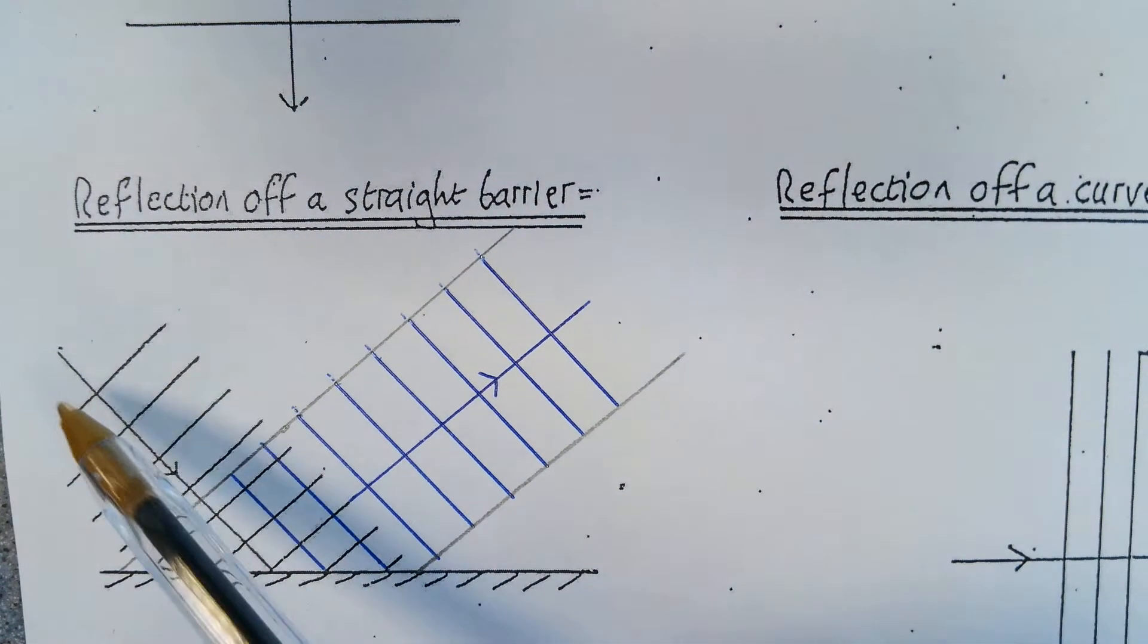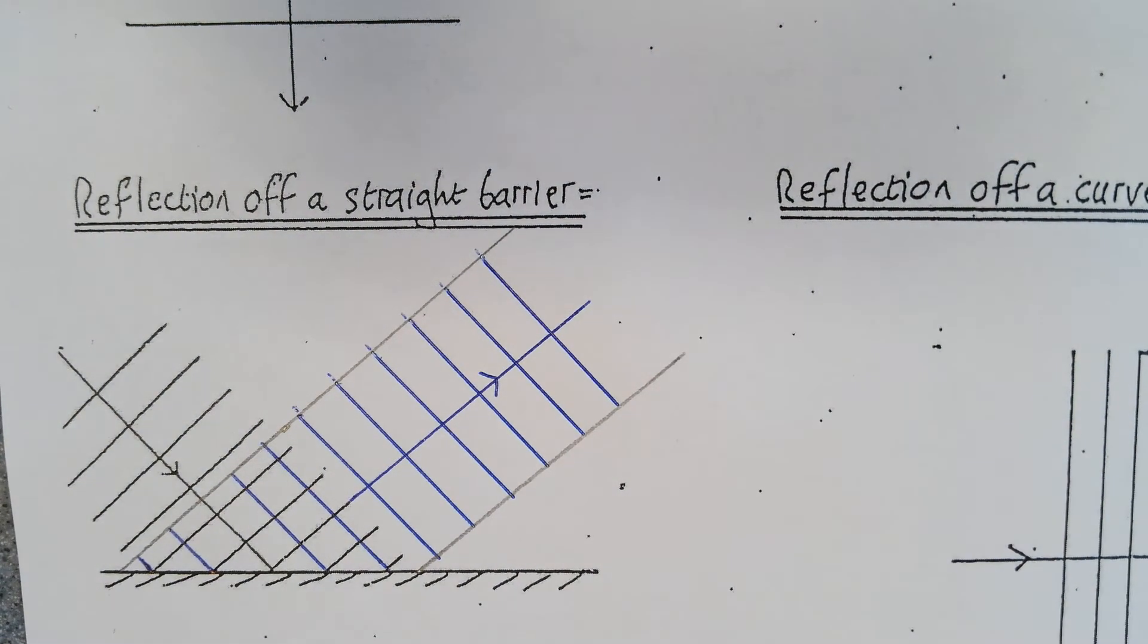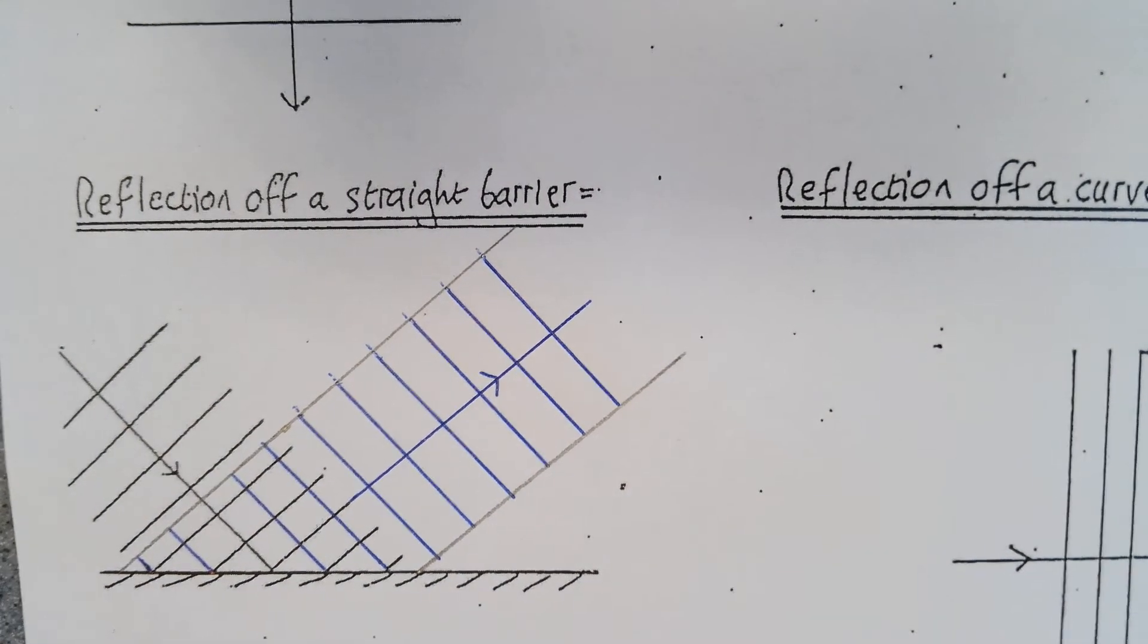Okay, so that shows the wave coming in and going out. Now these waves were all the same width as that, so it's traveling as a beam.